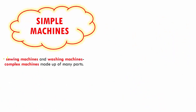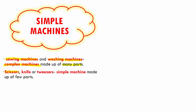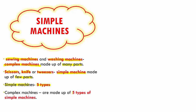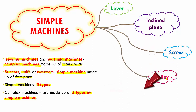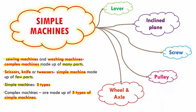Machines make our work easy and fast. Now, simple machines — when we look at a sewing machine or washing machine, these are pretty complex machines made up of many parts. Whereas scissors, a knife, or tweezers are pretty simple machines made up of very few parts. Simple machines can be classified into five types: the lever, the inclined plane, the screw, the pulley, and the wheel and axle.